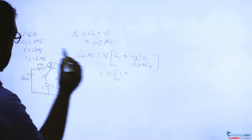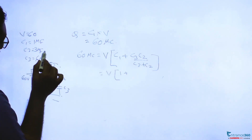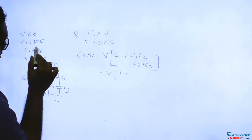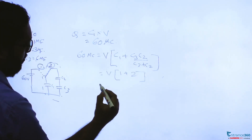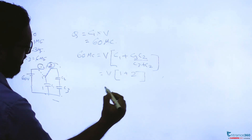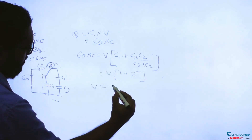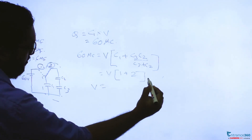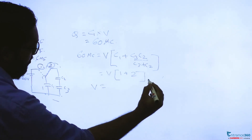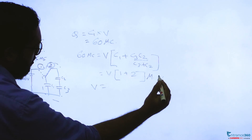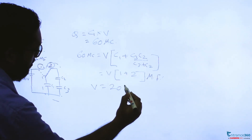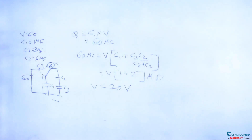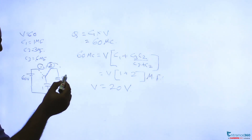C2 and C3 in series gives C2·C3 divided by C2 plus C3. That is 6 into 3, which is 18, divided by 6 plus 3, which is 9 — giving 2 μF. So total capacitance is 1 plus 2, which is 3 μF. Therefore the common potential V equals 60 divided by 3, which is 20 volt.